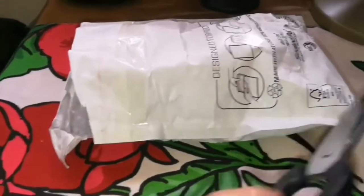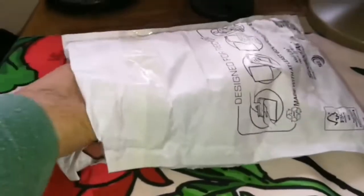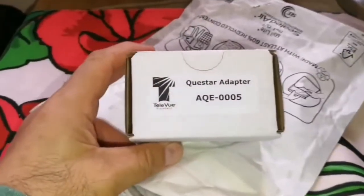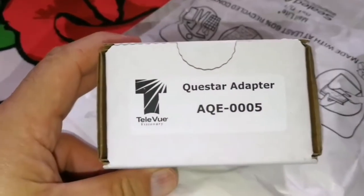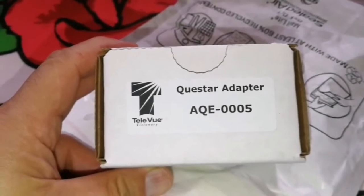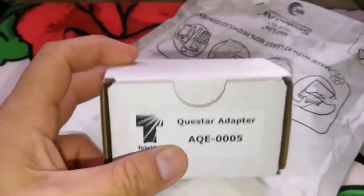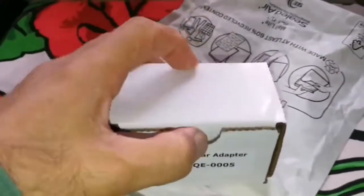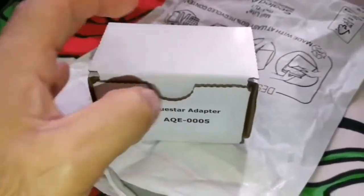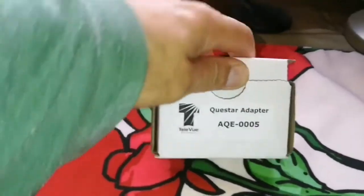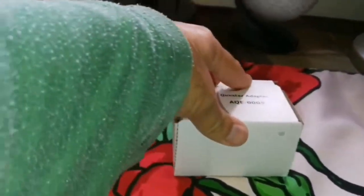So now I have opened the package. Let's see what is inside. It's called Questar Adapter, it is made by Teleview Visionary, Teleview Company, and that is AQE0005, the number of the part. Let's put this packaging away and see what is inside the box.